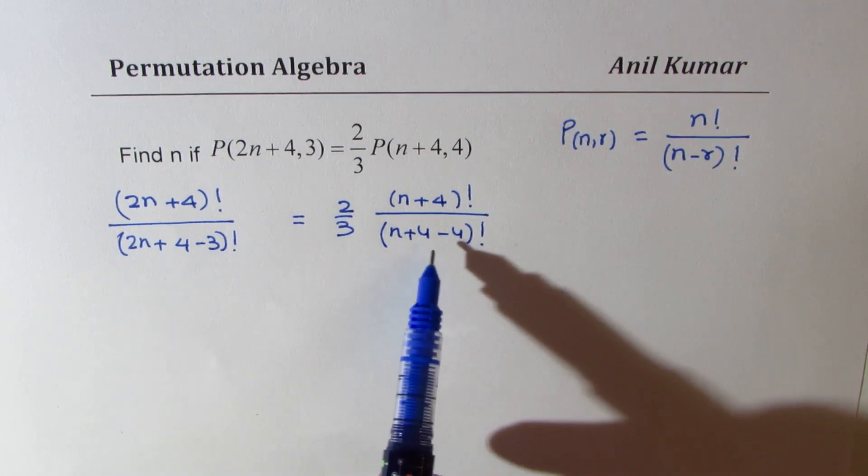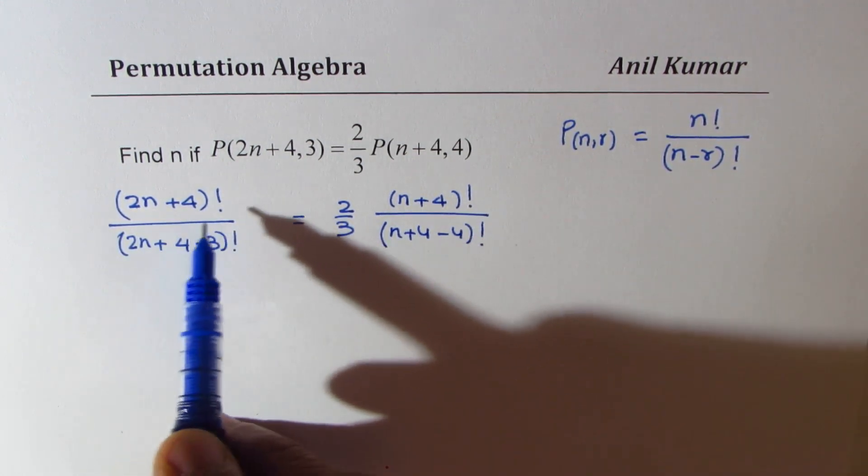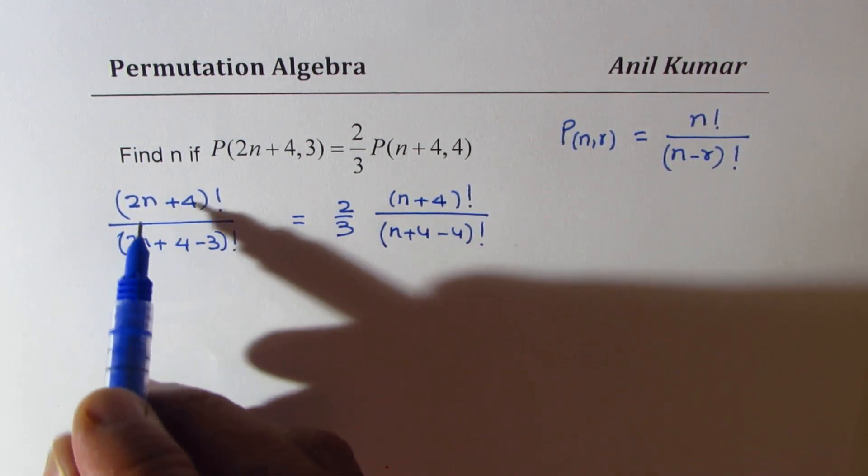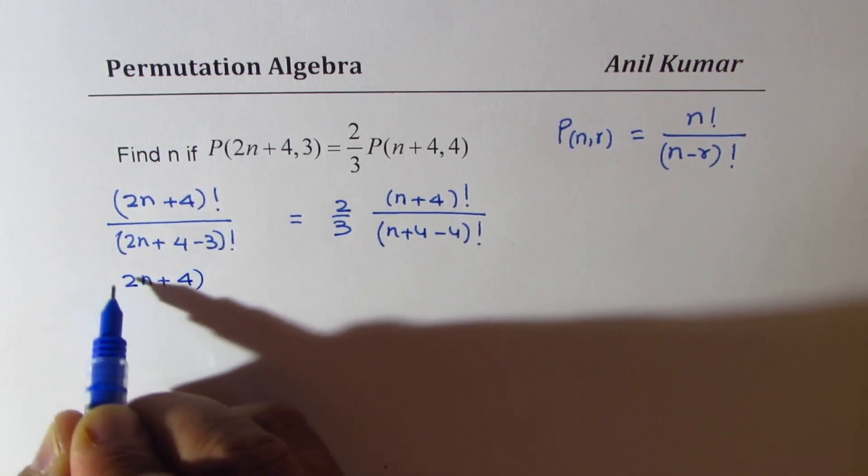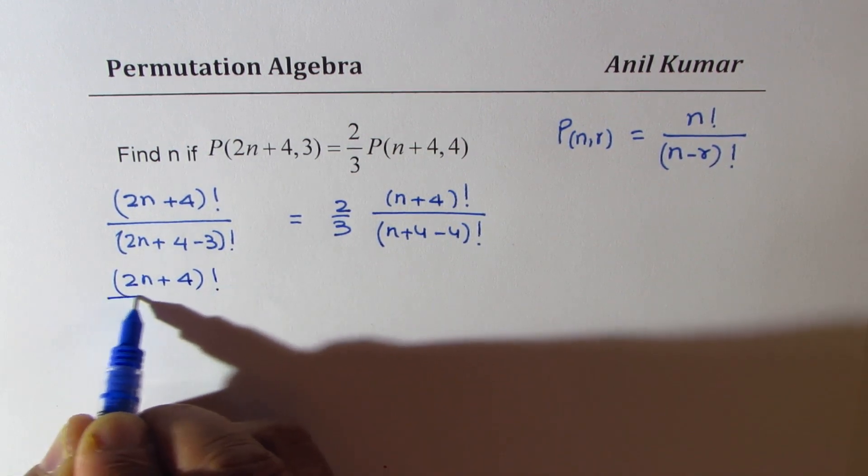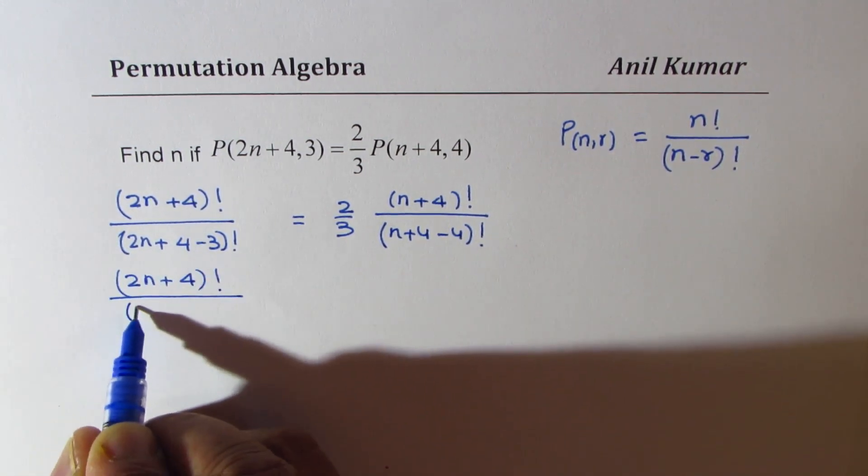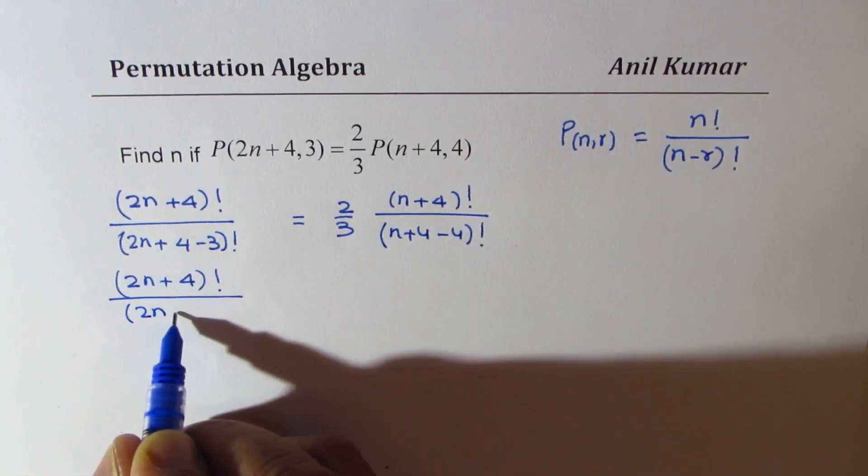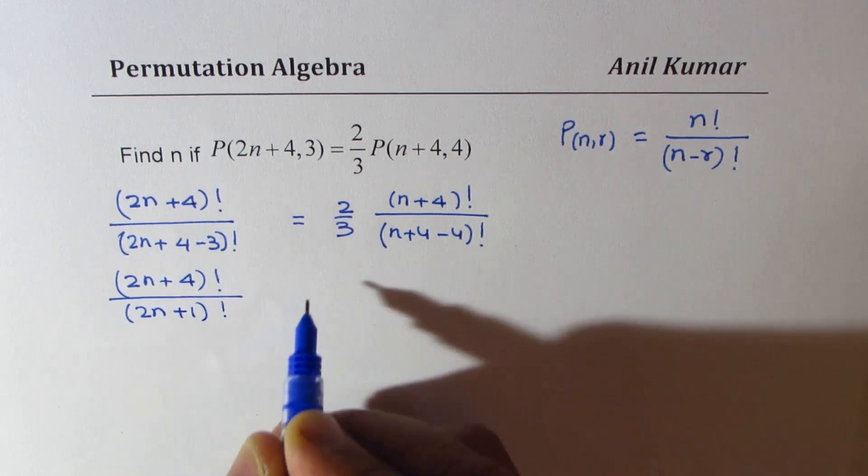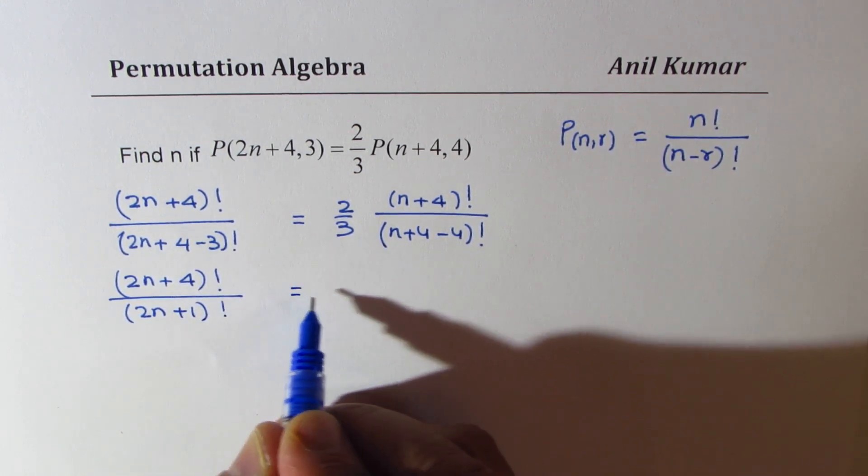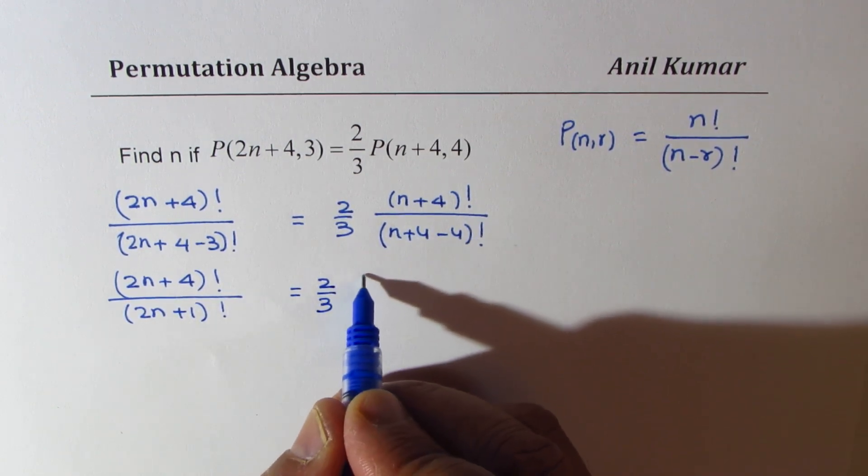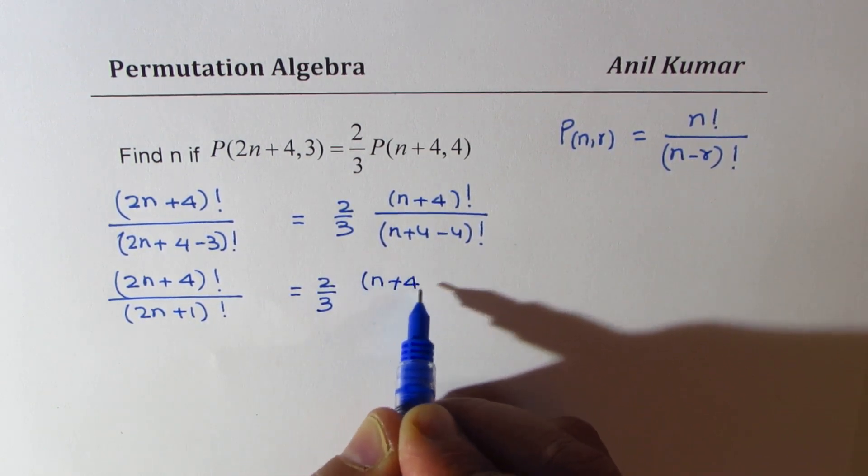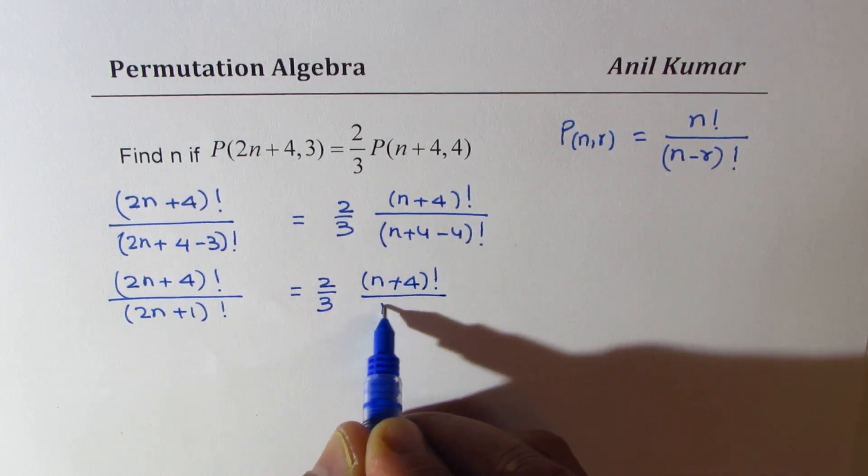Now let us try to expand it in the second step. Let me write this as (2n+4) factorial over, this gives us (2n+1). That should be equal to 2/3. We have (n+4) factorial over n factorial.